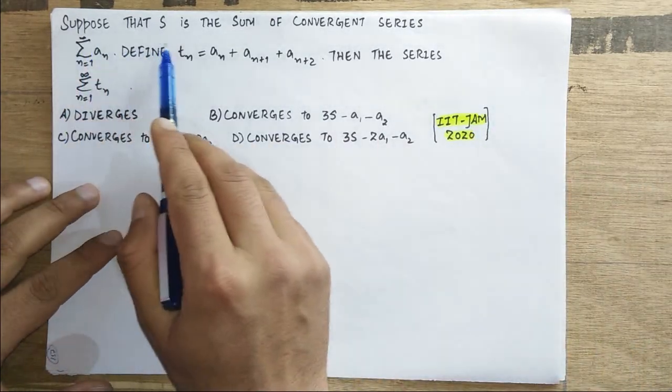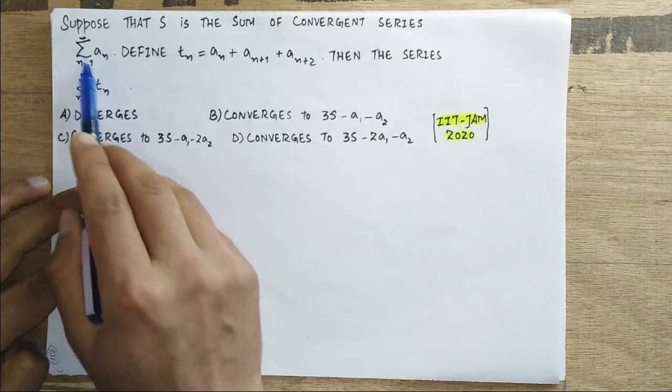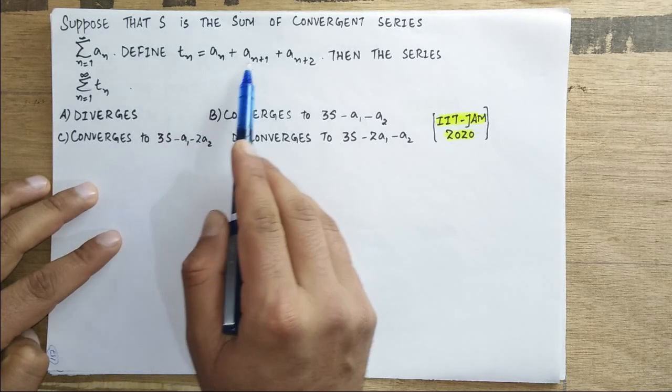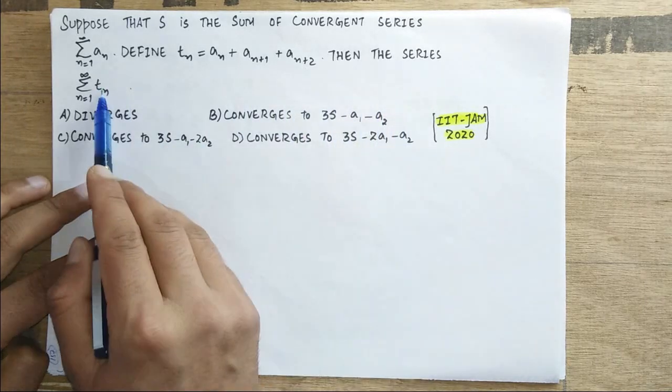Suppose that S is the sum of the convergent series summation n goes from 1 to infinity a_n. Define t_n to be a_n plus a_(n+1) plus a_(n+2). Then the series is this.